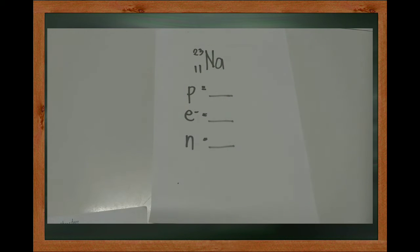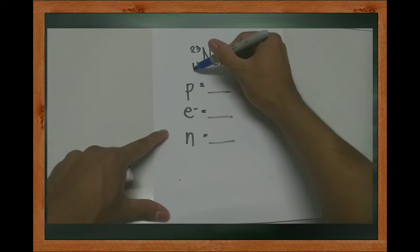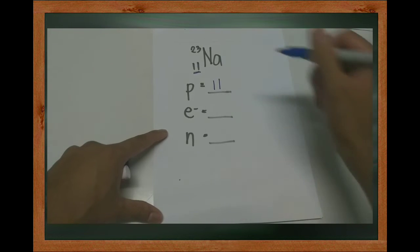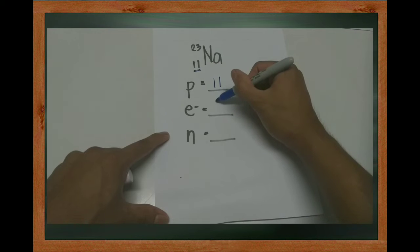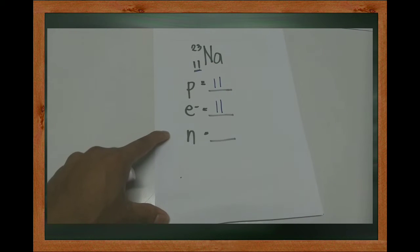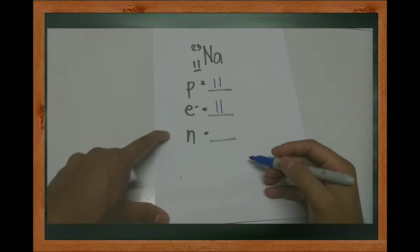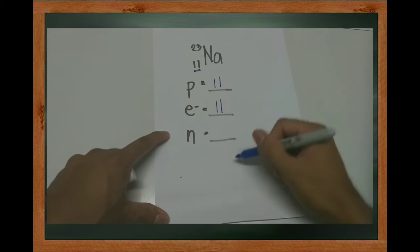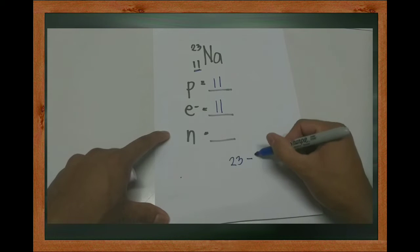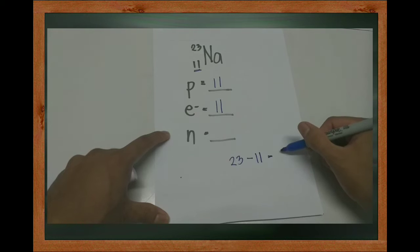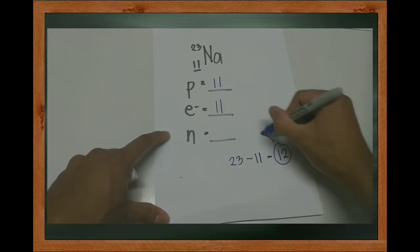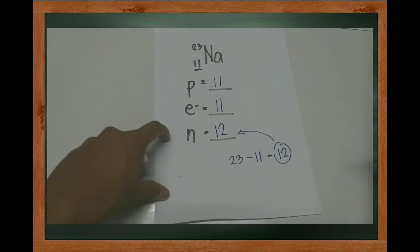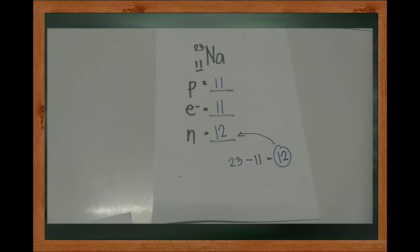Let's have another example: Na, which is sodium. The proton is 11 — that is the atomic number. The electron is also 11. For the neutron, we subtract: 23 minus 11 equals 12. So the neutron is 12. That is how we get the number of protons, electrons, and neutrons in an atom.